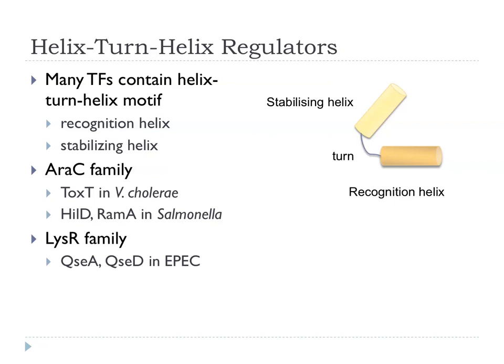Moving on to some specific examples of regulators. A very common regulator family is the helix-turn-helix transcriptional regulators. They contain this helix motif with a recognition helix that binds DNA and a stabilising helix. These are common in all aspects of bacterial physiology, but they also occur in virulence regulation. Members of the AraC family of helix-turn-helix regulators regulate cholera toxin production via ToxT. In Salmonella, HilD is involved in regulation of the type 3 secretion system. There's another group, the LysR family, which are involved in some aspects of quorum sensing.